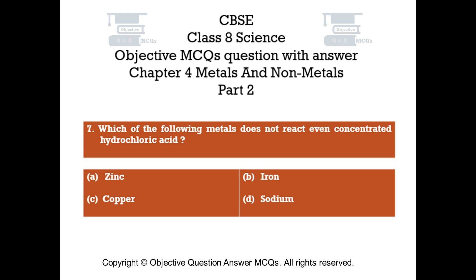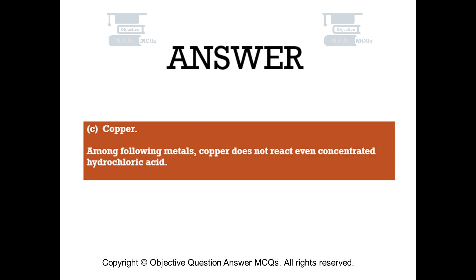Question number 7: Which of the following metals does not react even with concentrated hydrochloric acid? Option A: Zinc. Option B: Iron. Option C: Copper. Option D: Sodium. The right answer is Option C — Copper. Among the following metals, copper does not react even with concentrated hydrochloric acid.